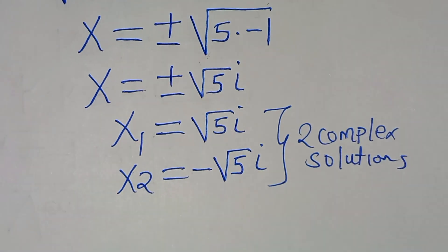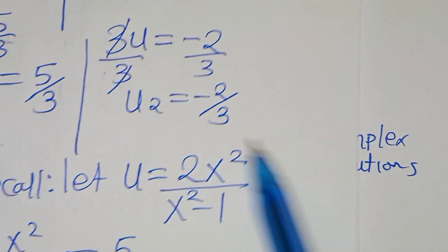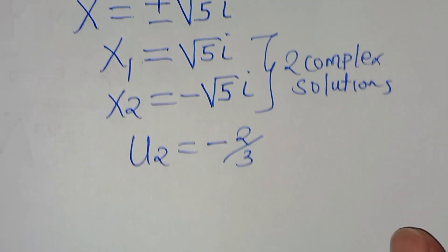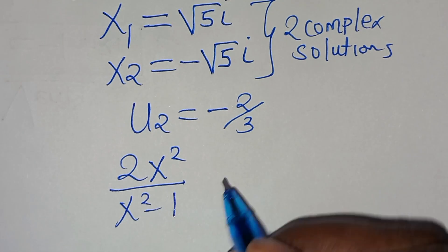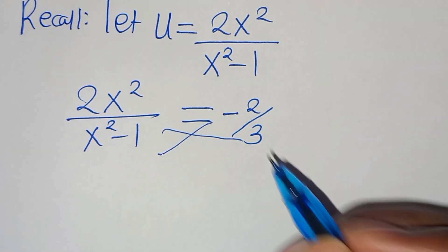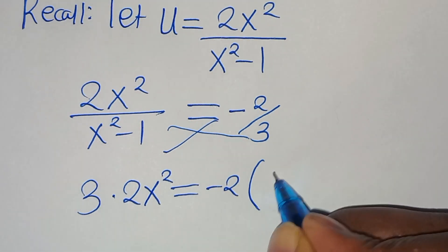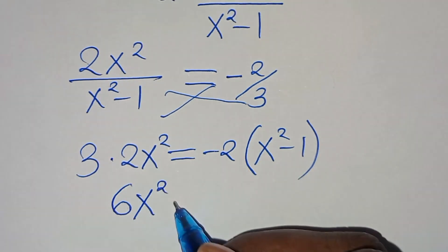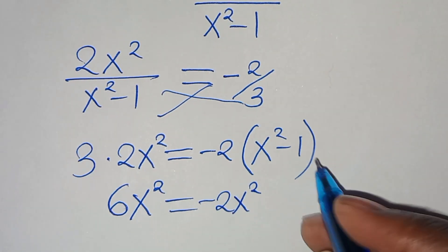Now for u₂ = -2/3: substituting u = 2x²/(x²-1) = -2/3. Cross multiplying: 3 × 2x² = -2(x²-1), so 6x² = -2x² + 2.